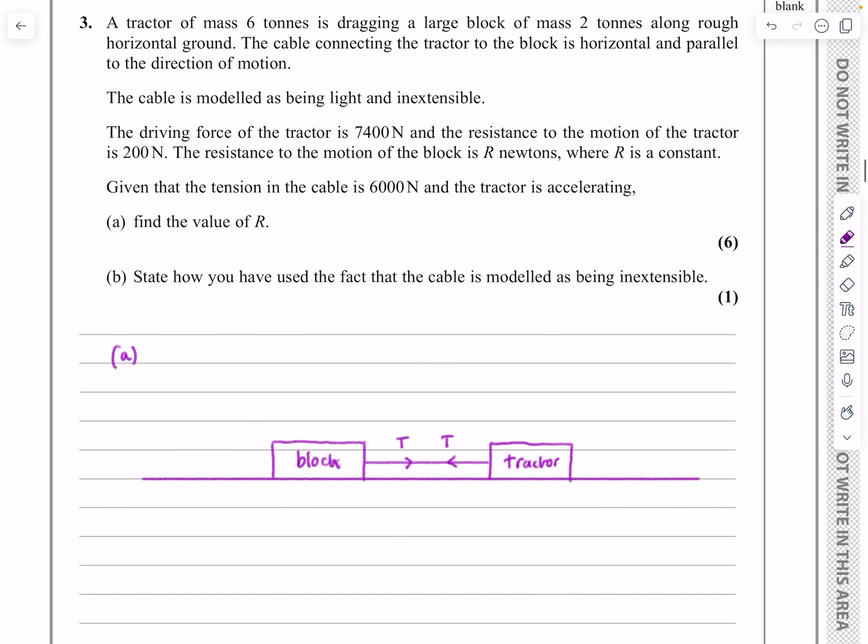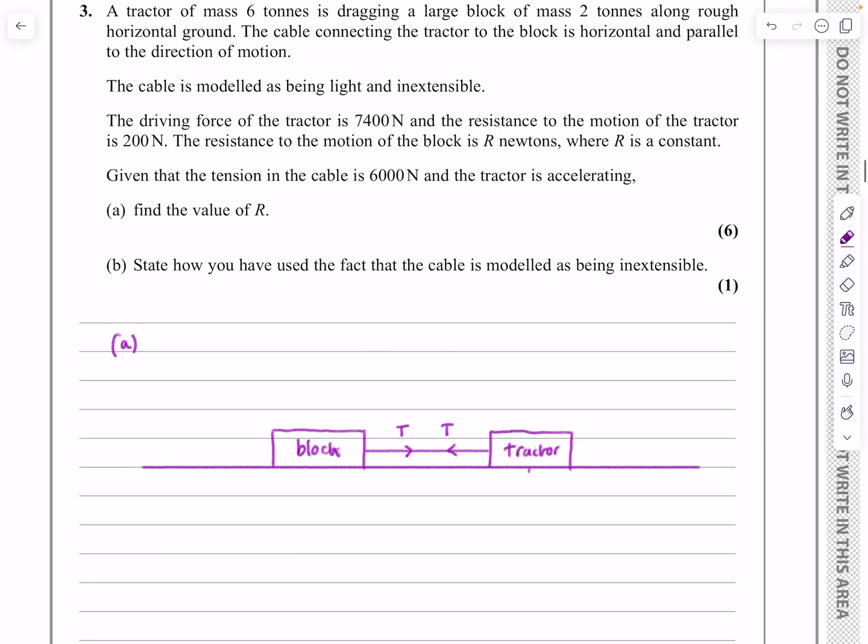It tells me that the tractors have mass six tonnes. So this is the first place just to be careful about. If it's mass six tonnes, then the weight, well, six tonnes is 6,000 kilograms. So when we're doing weight mg, I'm going to get 6,000g there. I would normally put my reaction force on here and call it RT, but R has been taken by the actual question here. So I can't call it RT. So my normal other letter then is N, normal reaction.